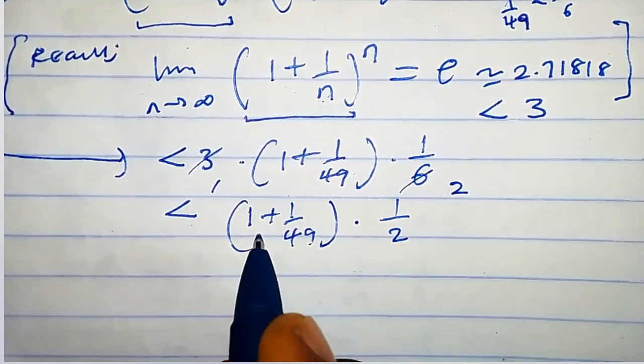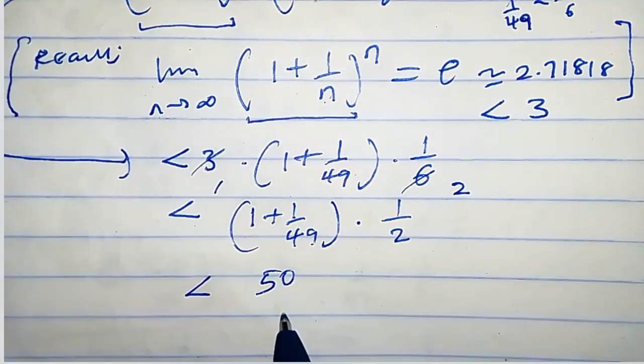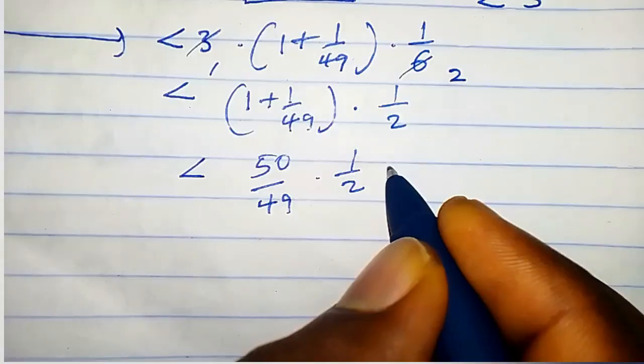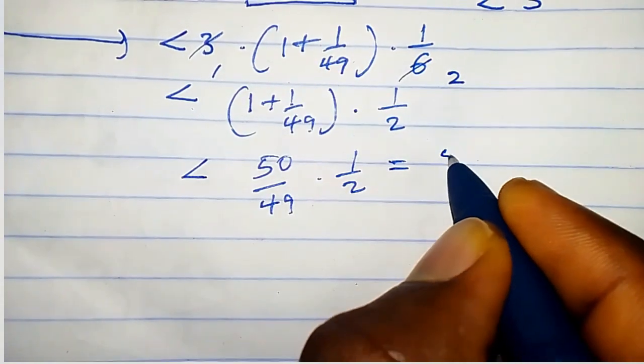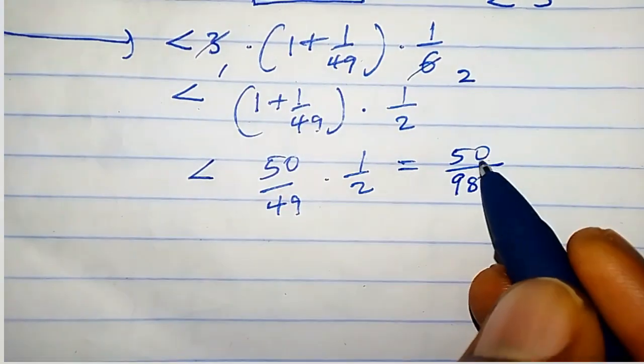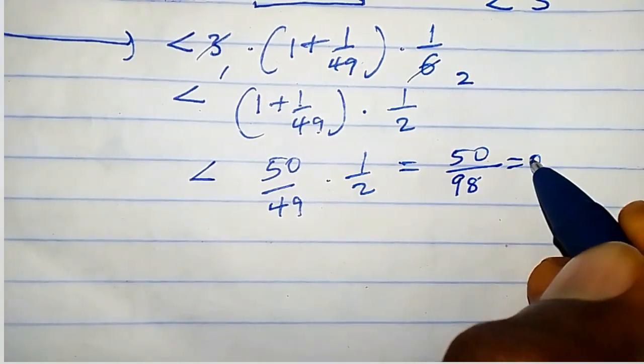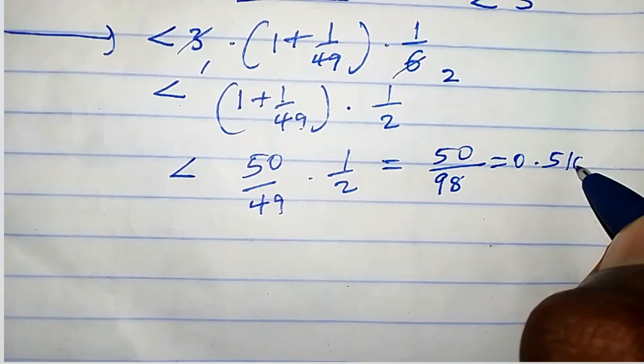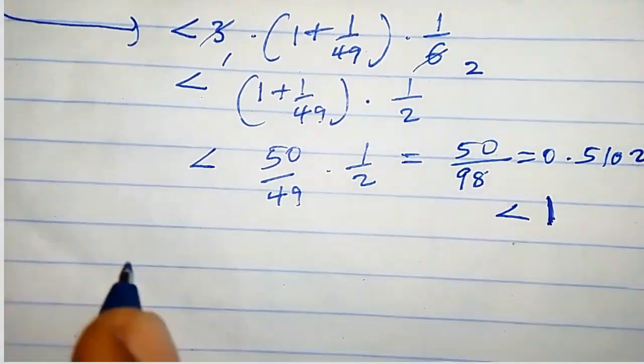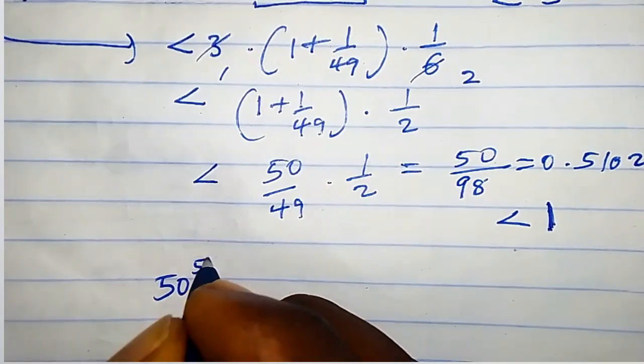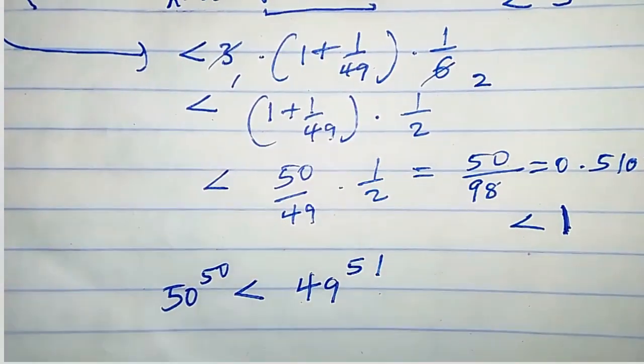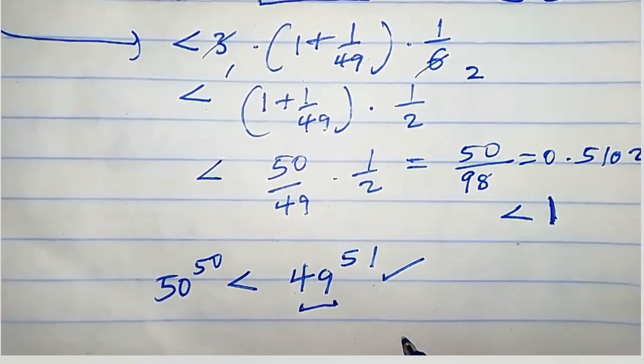(1 plus 1 over 49) is exactly 50 over 49, so we have times 1 over 2, which equals 50 over 2 times 49, that is 98. If you plug this into your calculator, you obtain 0.5102, and this is less than 1. That means that 50 raised to the power 50 is less than 49 raised to the power 51. So this is the larger number.